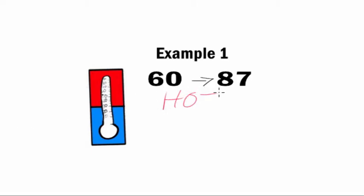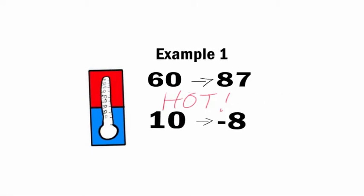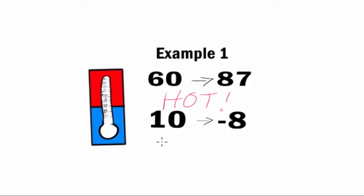Thinking about the same scenario, let's say that on a different day, we initially record a temperature of 10. We have a temperature change at some point in the day, and it gives us negative 8. Going from 10 to negative 8, what happened? The number got smaller, so it got colder.